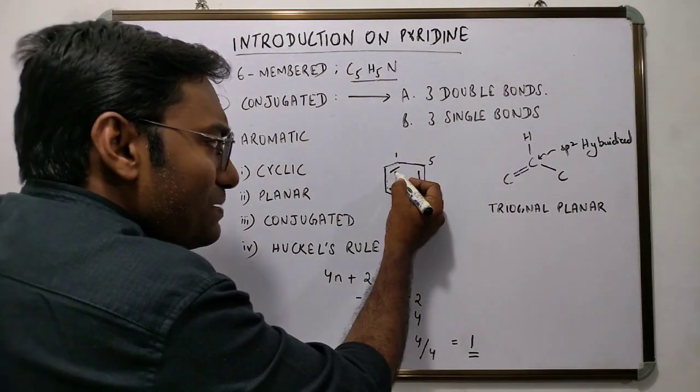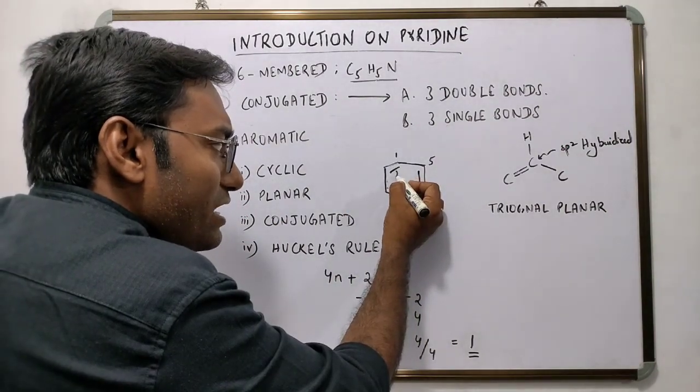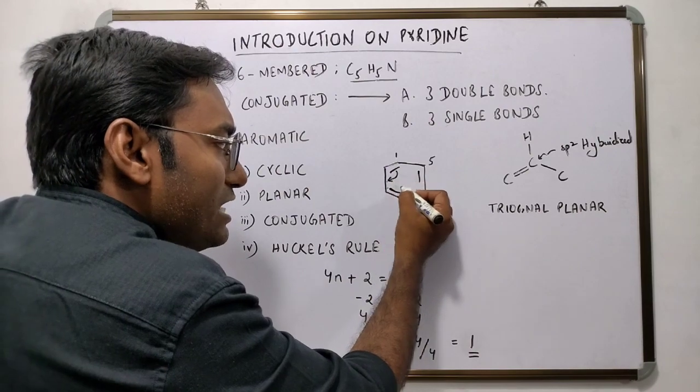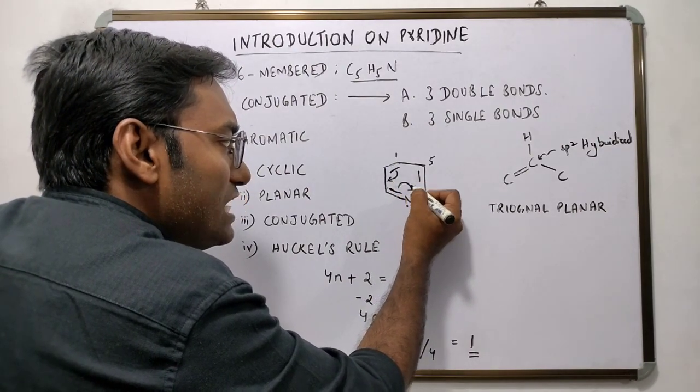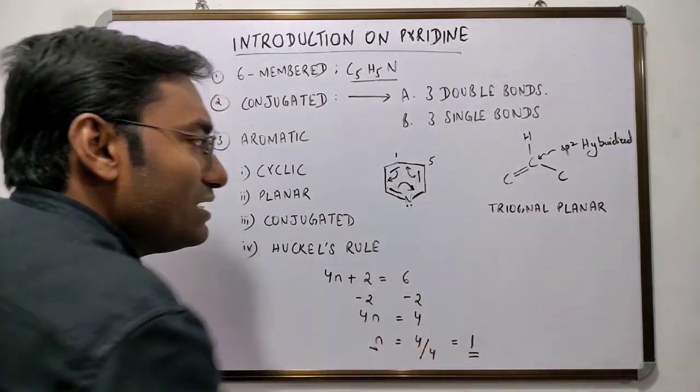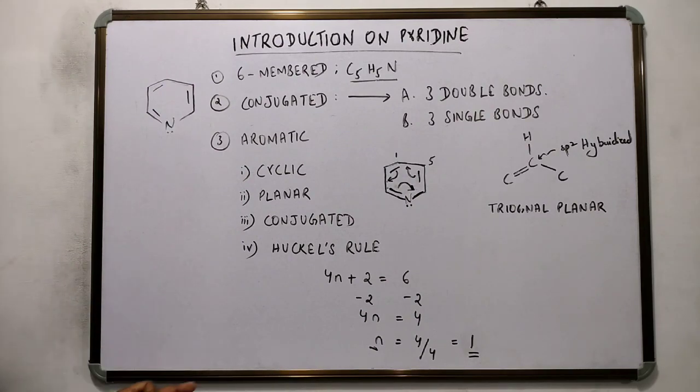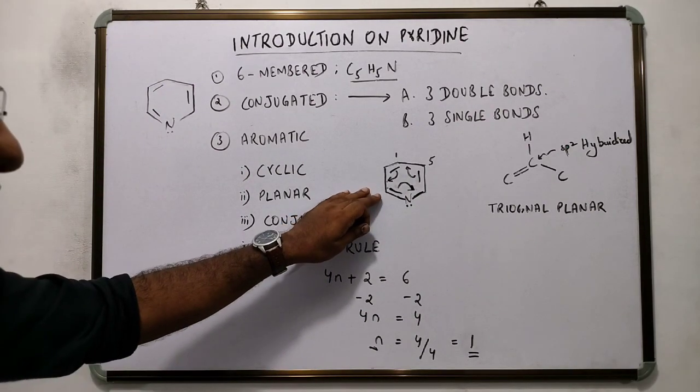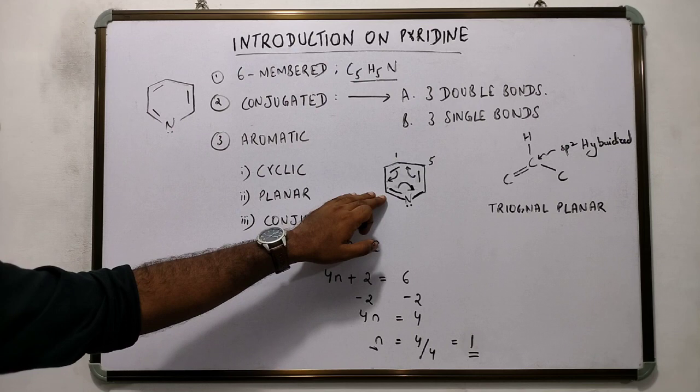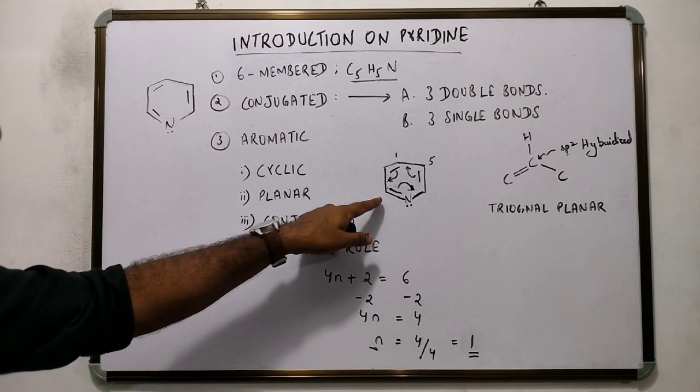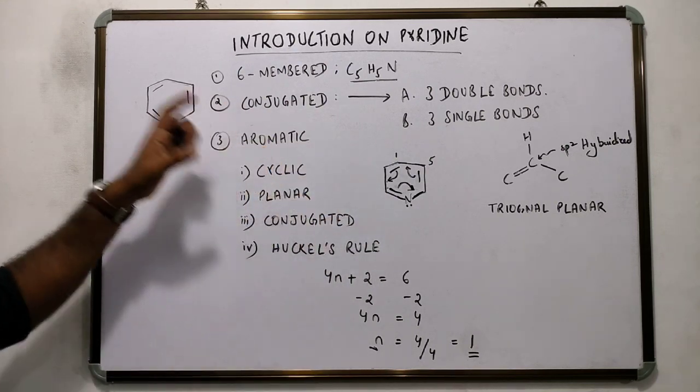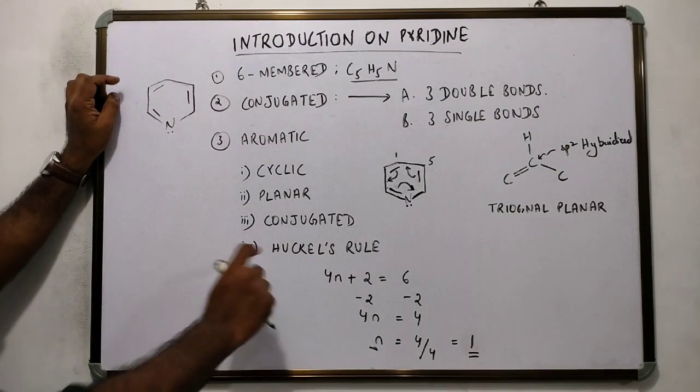Secondly, there is a possibility that the pi electron may get delocalized to the adjacent position. If it gets delocalized, that would mean that the molecule is aromatic. But does that delocalization take place? For this, we have to apply Huckel's rule.